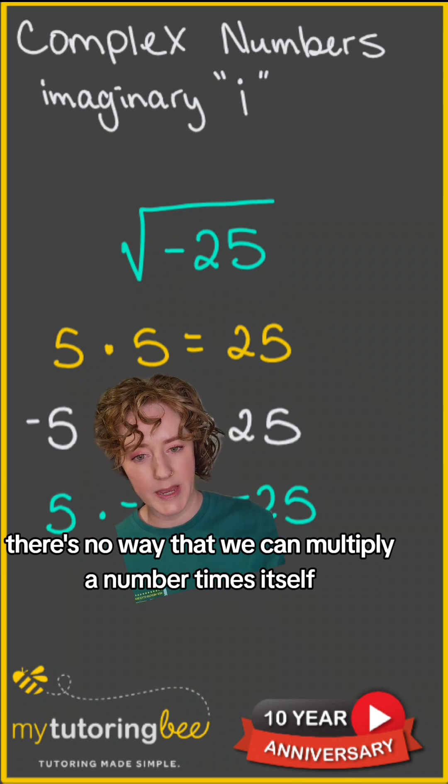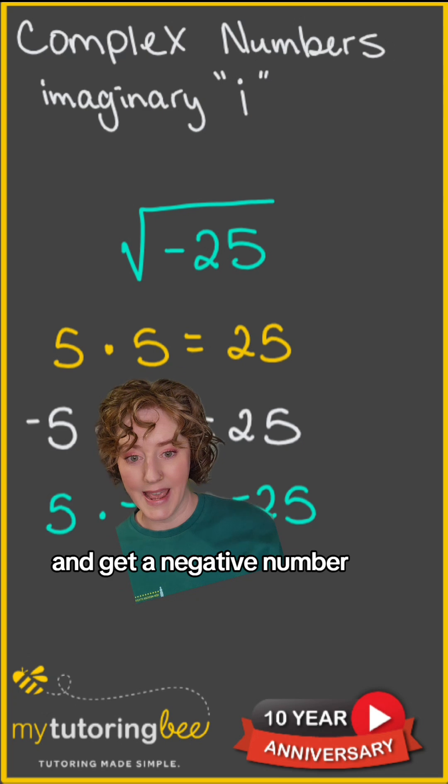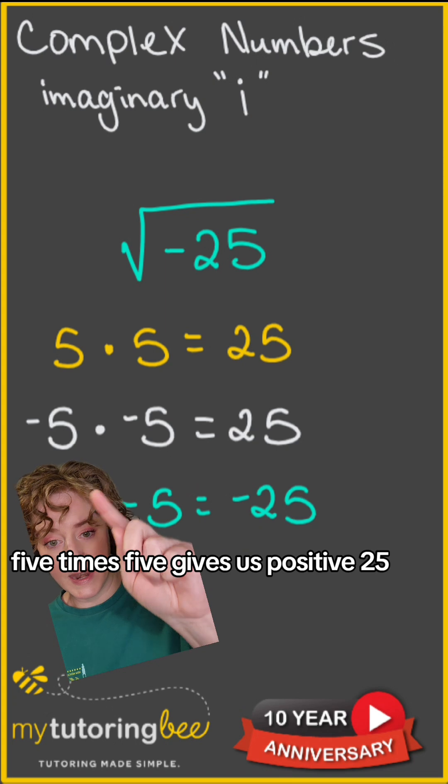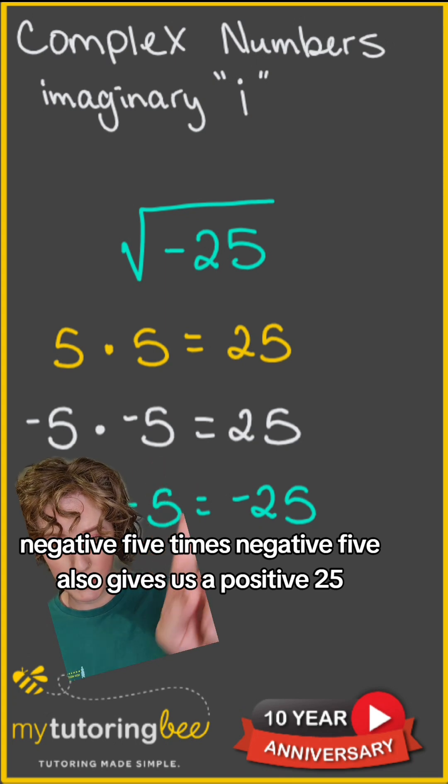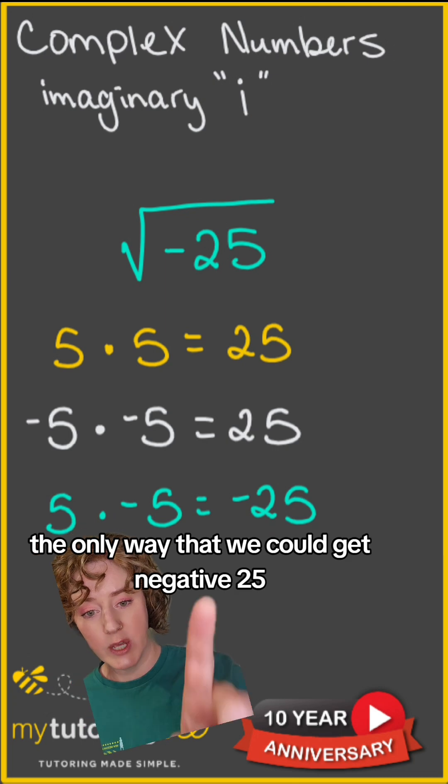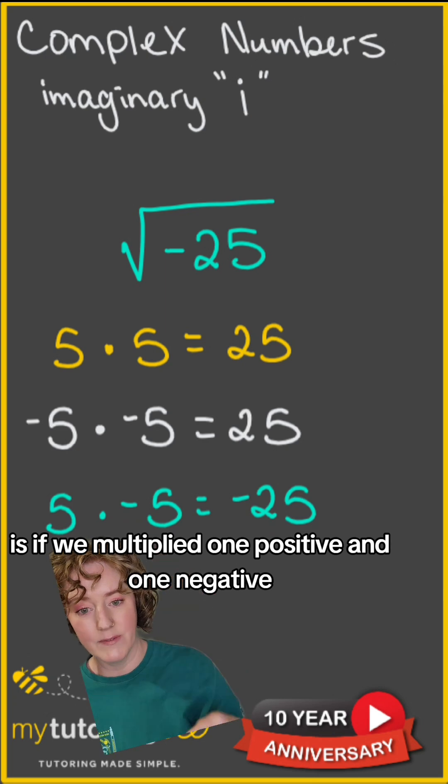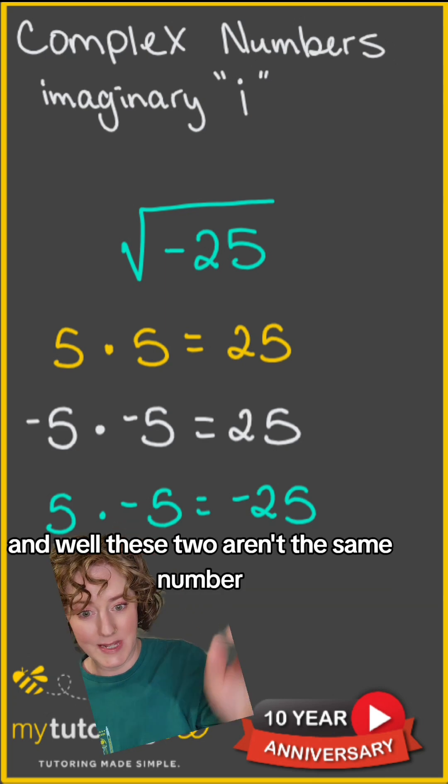There's no way that we can multiply a number times itself and get a negative number. 5 times 5 gives us positive 25. Negative 5 times negative 5 also gives us positive 25. The only way we could get negative 25 is if we multiplied one positive and one negative, but these two aren't the same number.